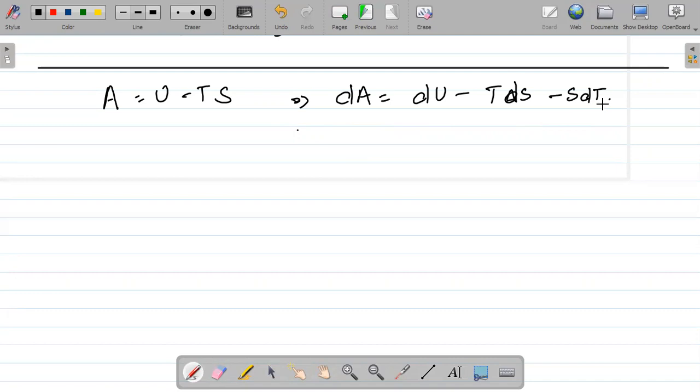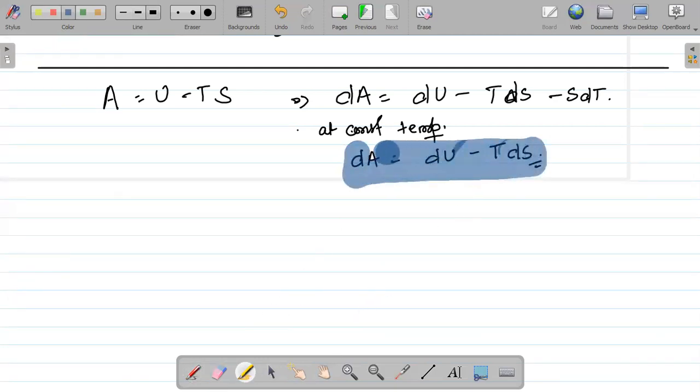At constant temperature, at constant temperature conditions, dA will be equal to dU internal energy change minus TdS. This is a key outcome.